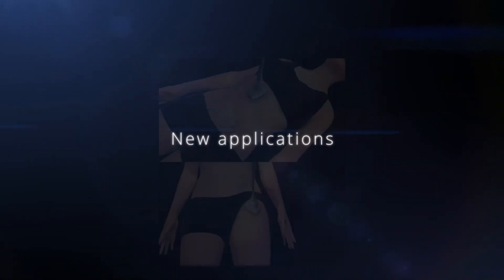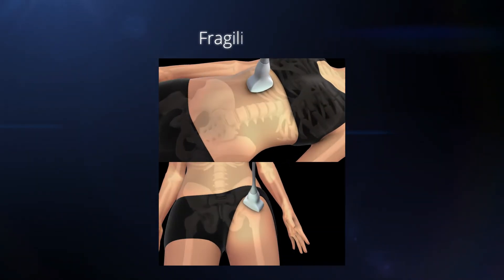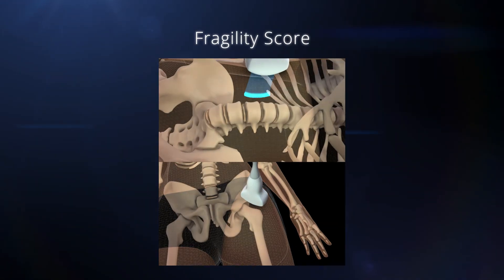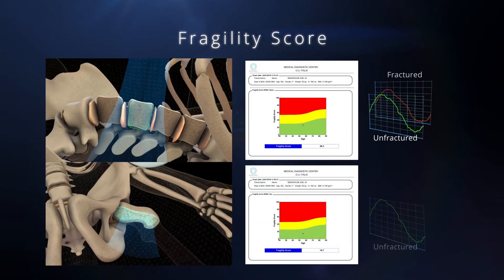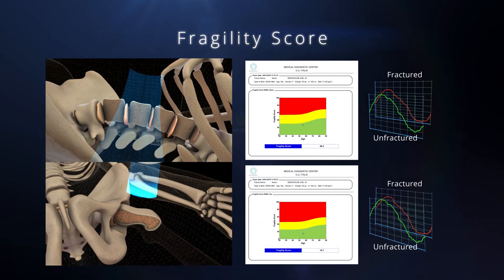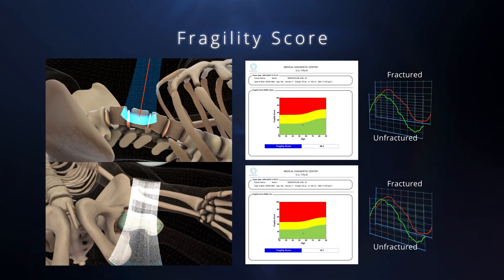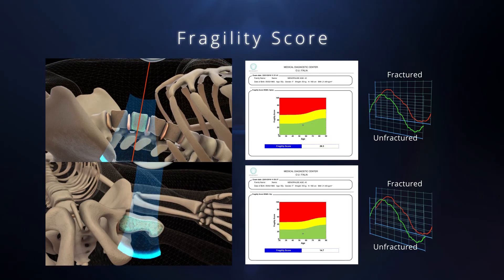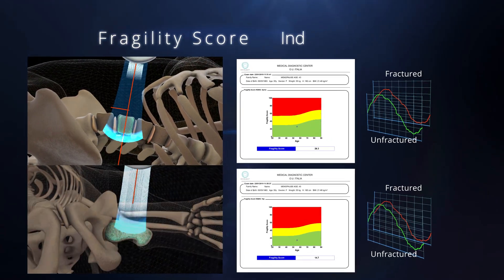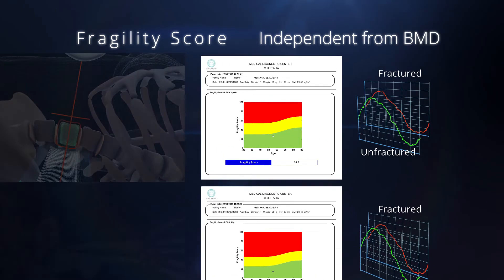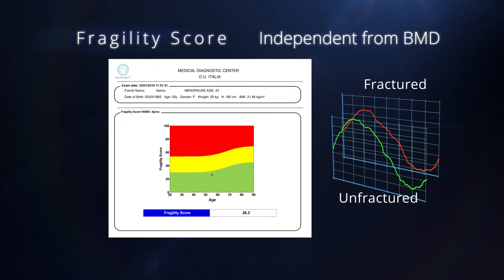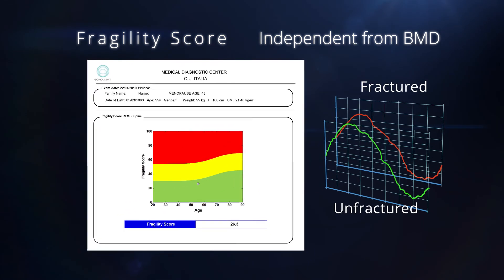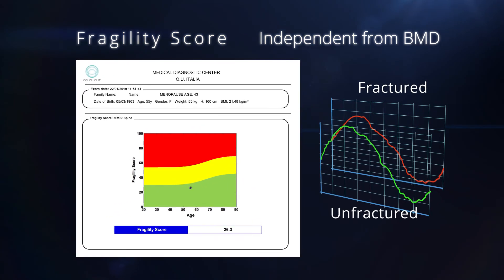During both femoral and lumbar echographic scans, REMS also allows measurement of an innovative parameter — the fragility score — which automatically assesses bone fragility and the risk of fracture based on a comparison with reference spectral models developed from patients with and without fractures.